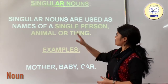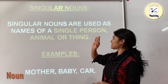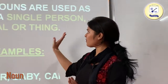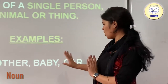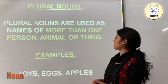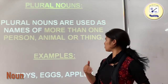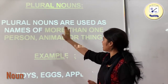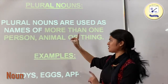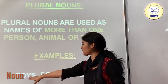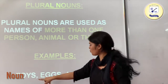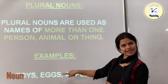Now we have singular nouns. Singular nouns are used as names of a single person, animal or thing. If you are talking about one thing, that is a singular noun. Examples: mother, a baby, a car. Now plural nouns are used when talking about more than one person, animal or thing. For example, toys — if you talk about one toy that is singular, but more than one is toys. Other examples: axes and apples.